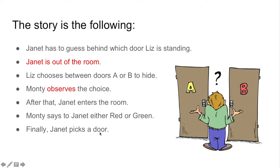So it's simple. That's the game. Liz chooses A or B. Monty observes. So he knows. That's why he has two information sets. And he says red or green. And then Janet enters the room. But Janet doesn't know Liz's choice. But she knows about Monty's decision.